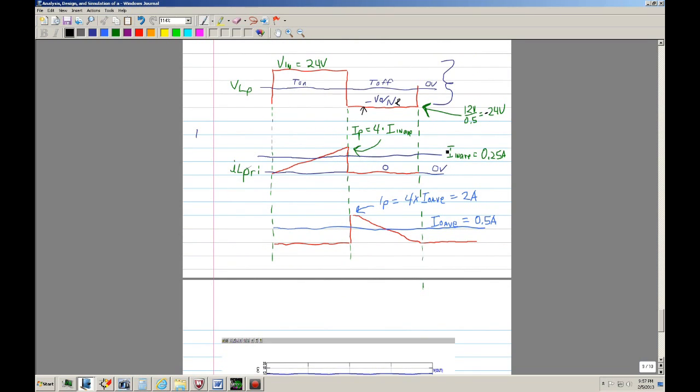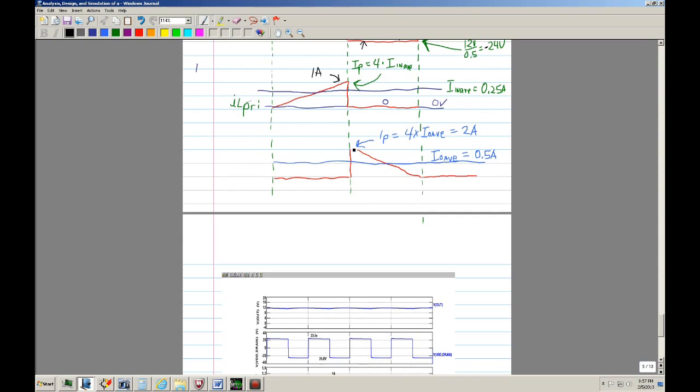So in this case, it's 12 volts divided by 0.5, which is the turn ratio, this turn ratio that we just calculated. So we're supposed to have negative 24 volts right there. And we already know that the input current to the primary inductor is 250 milliamps. All we have to do is multiply the average by 4 and we get the peak current.